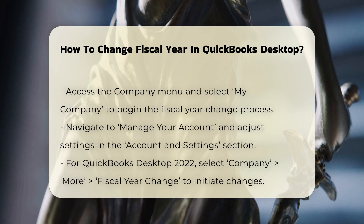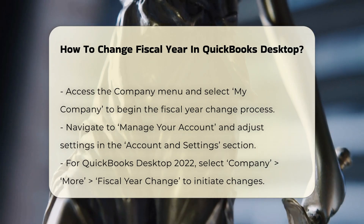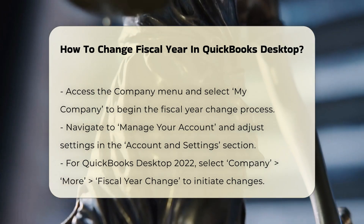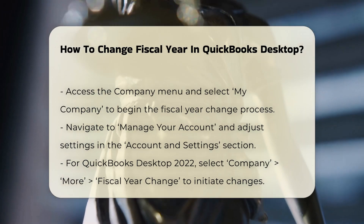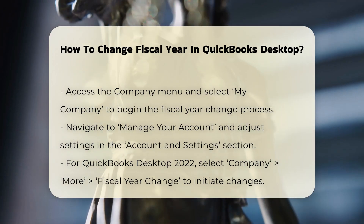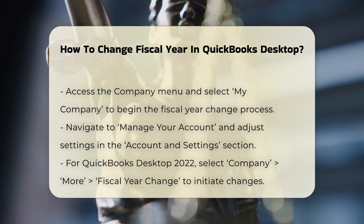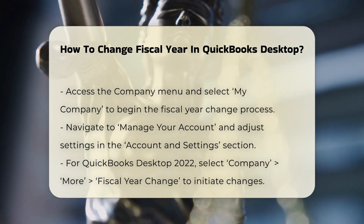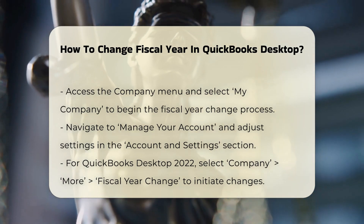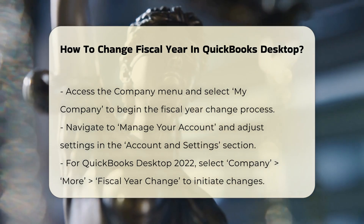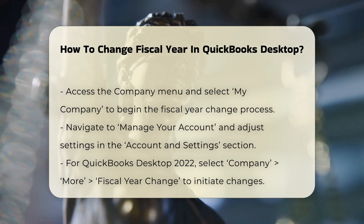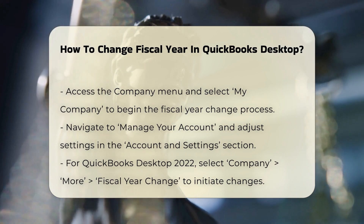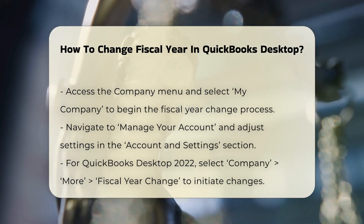Accessing Company Settings. To initiate the process, go to the Company menu and select My Company. Then, navigate to Manage Your Account and make the necessary adjustments in the Account and Settings section.